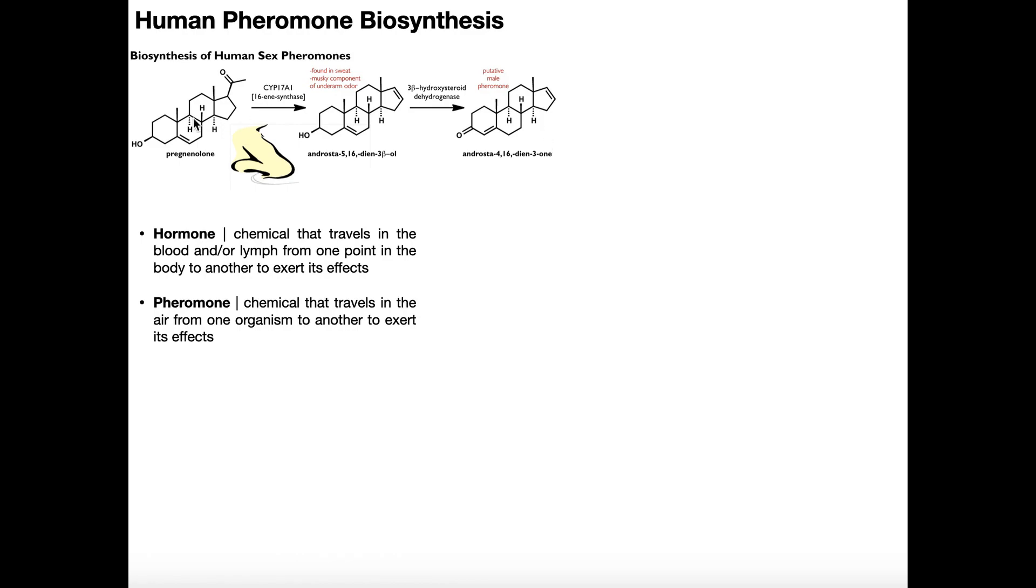So just to be clear, this is the pathway and where it stops in the axilla or the armpit. But if I'm the testes, I'm going to take this further. So the testes have another enzyme, which is also present in steroidogenesis, called 5-alpha reductase.